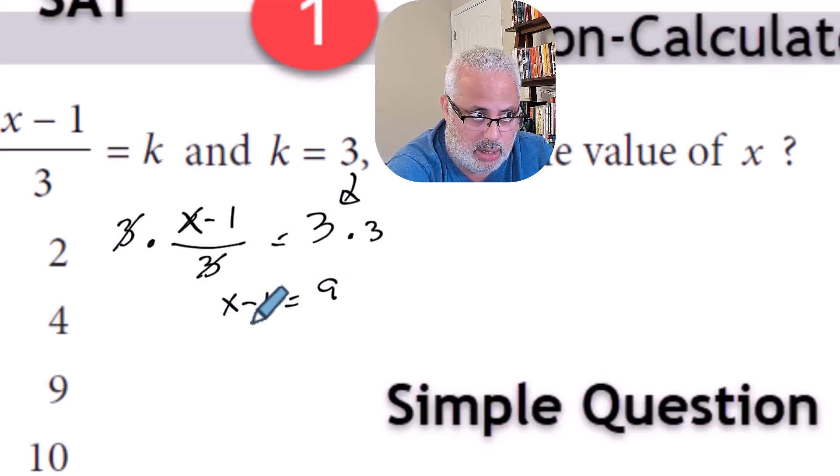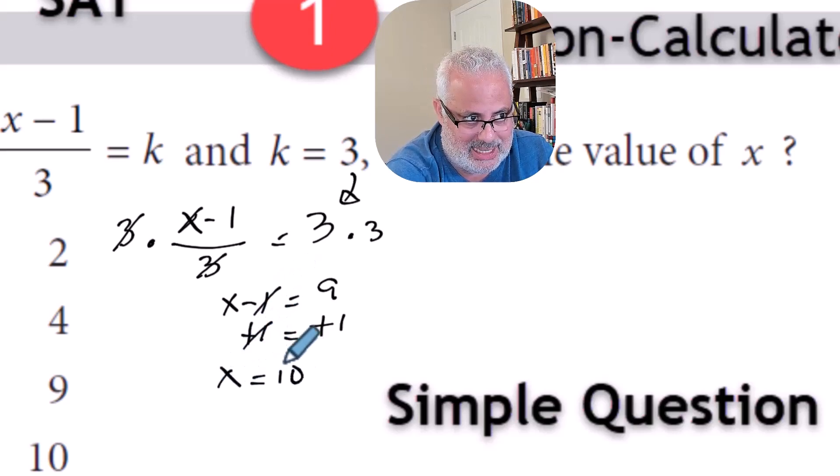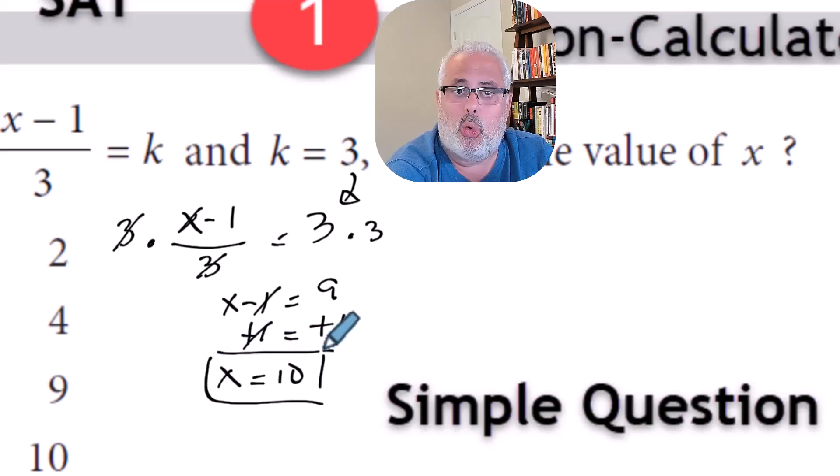You continue working with the procedure here, which is canceling the negative 1 by doing the opposite, which is plus 1, cancel negative 1 plus 1 that makes 0 and X equals 10. This is the answer of the first question of the SAT non-calculator portion.